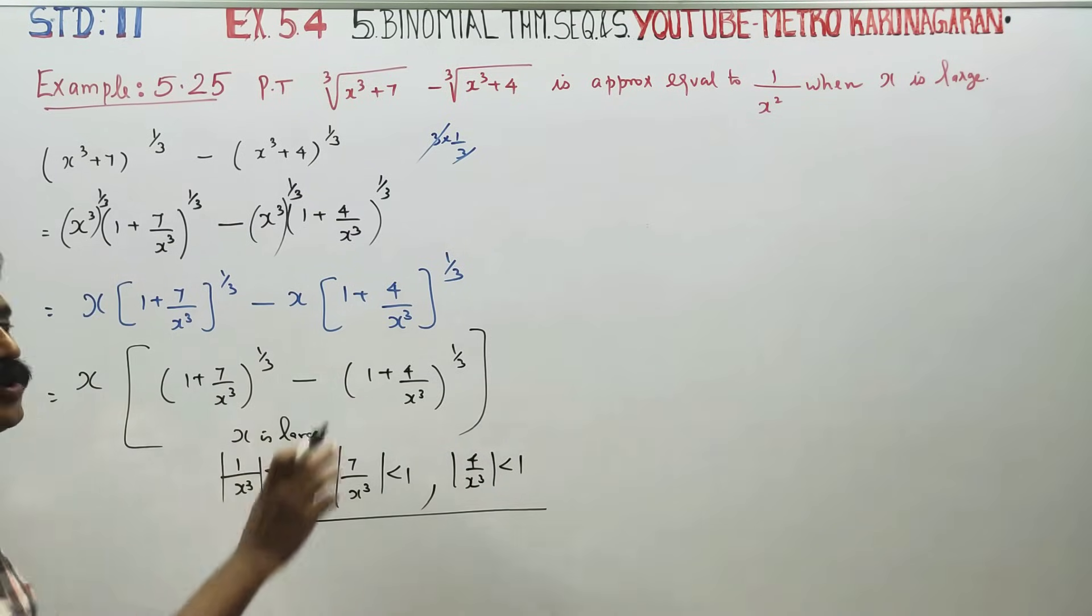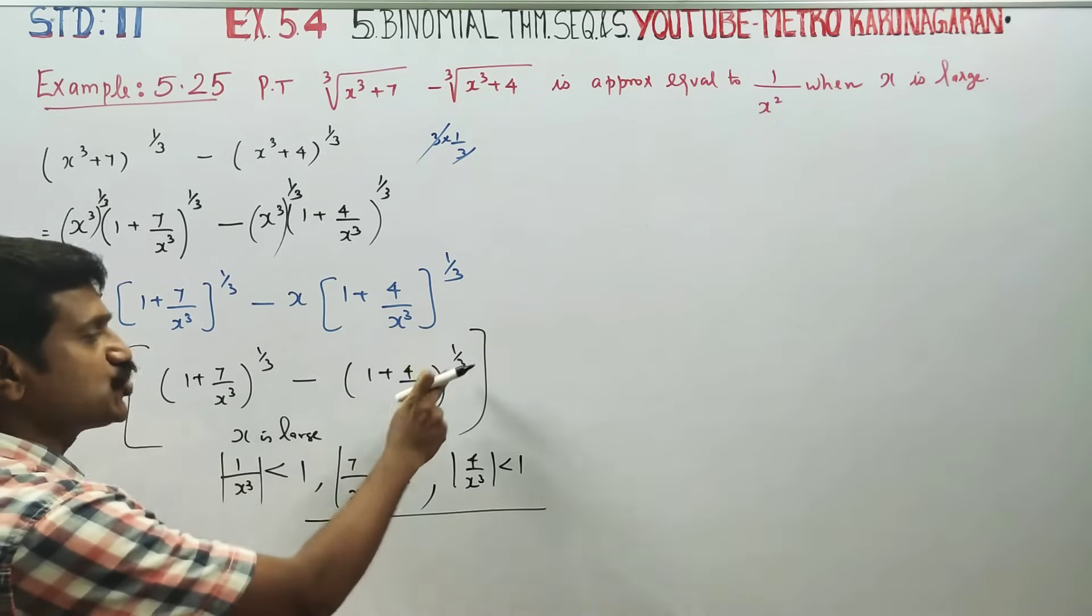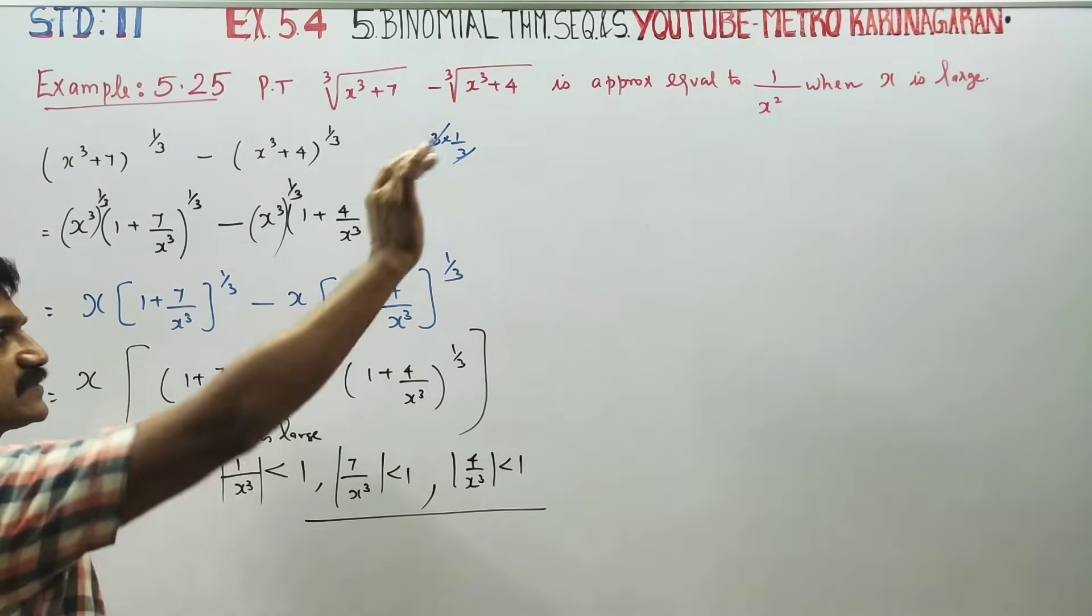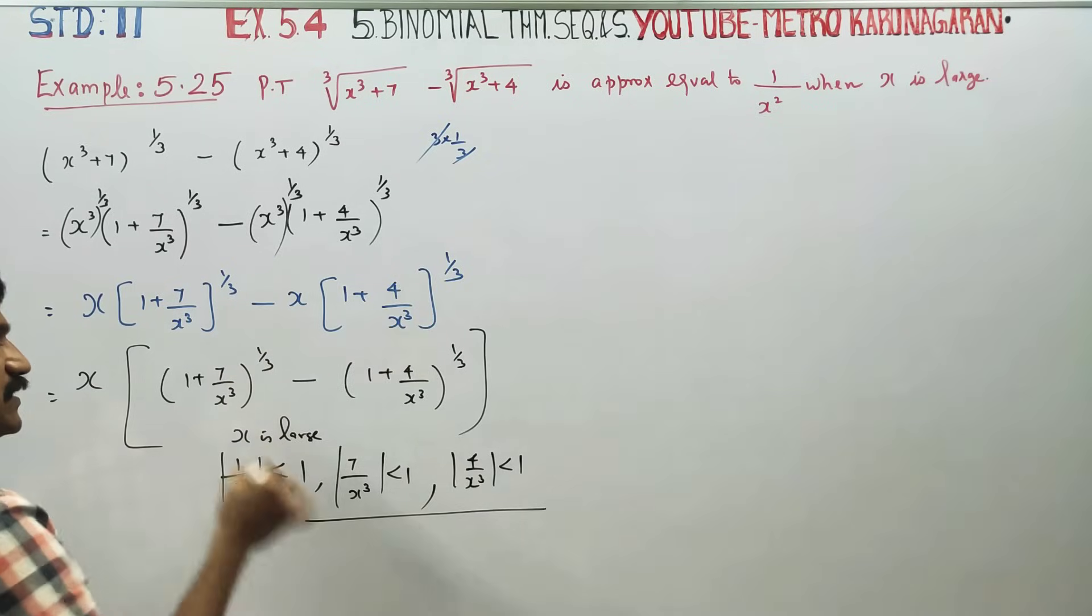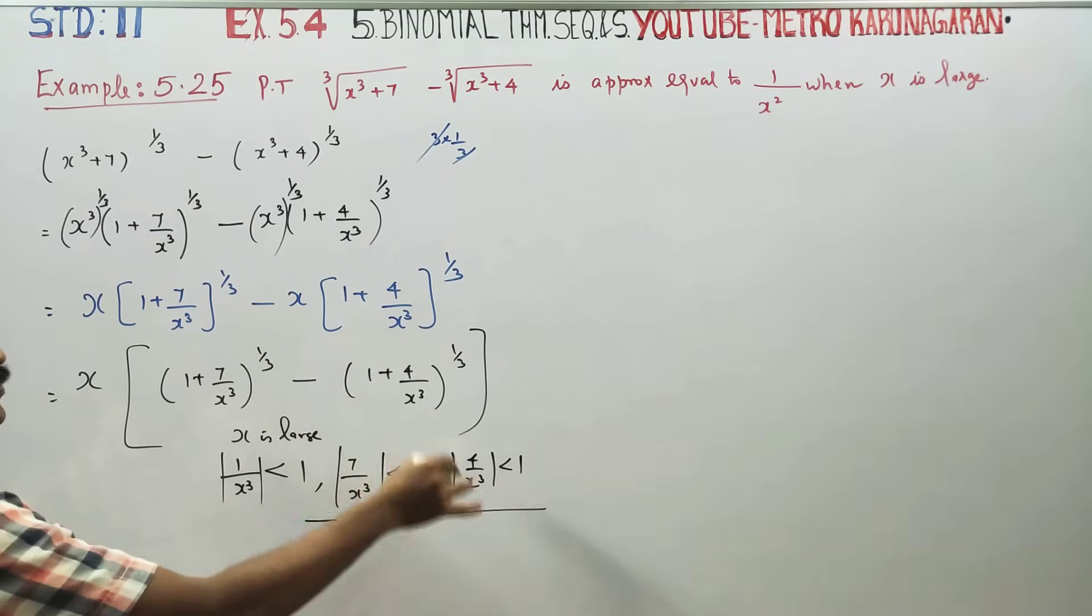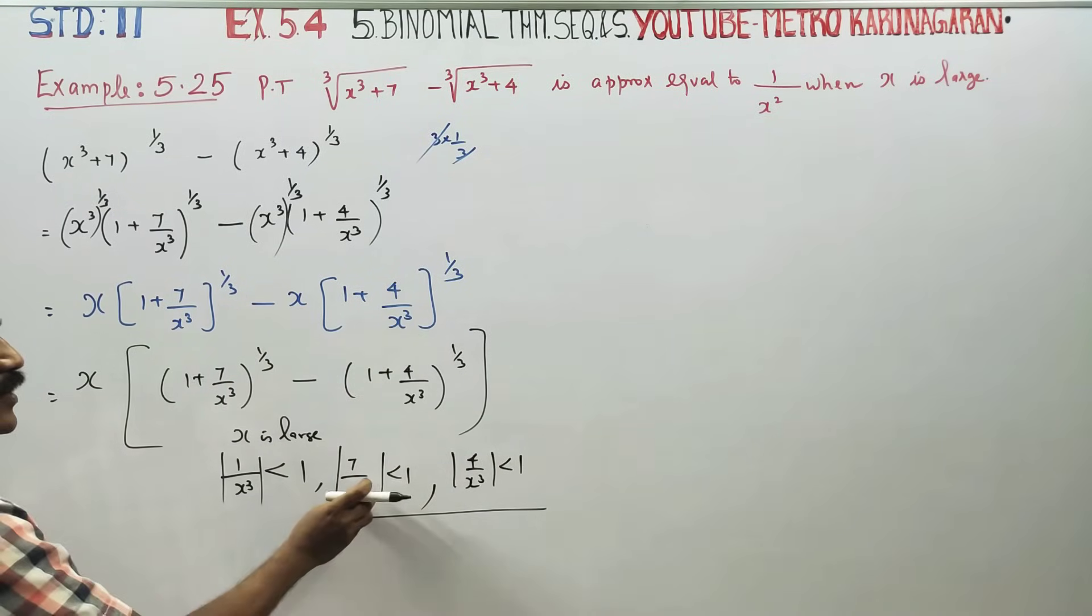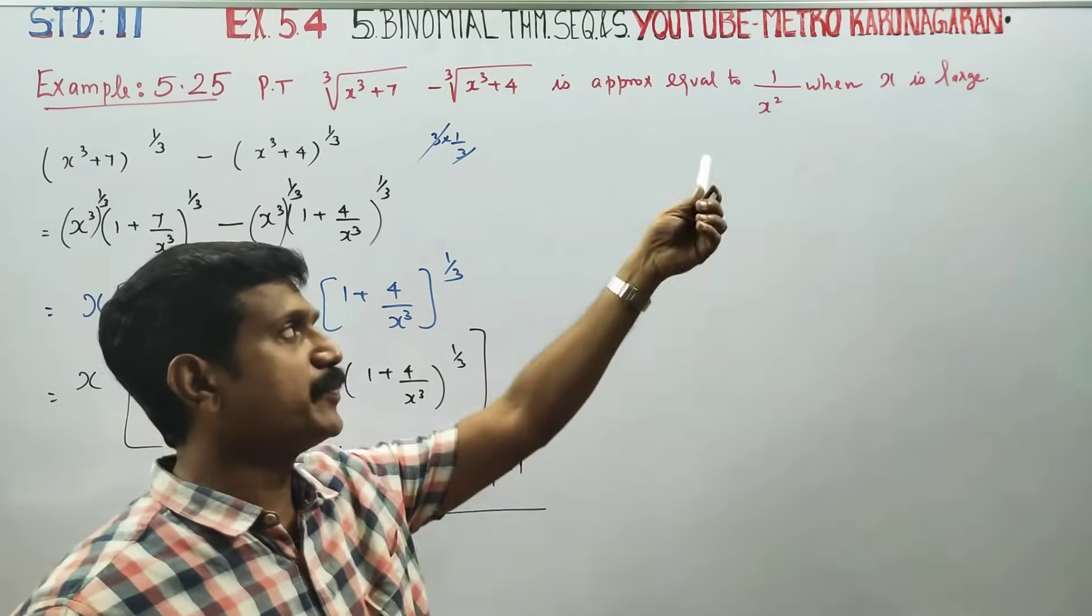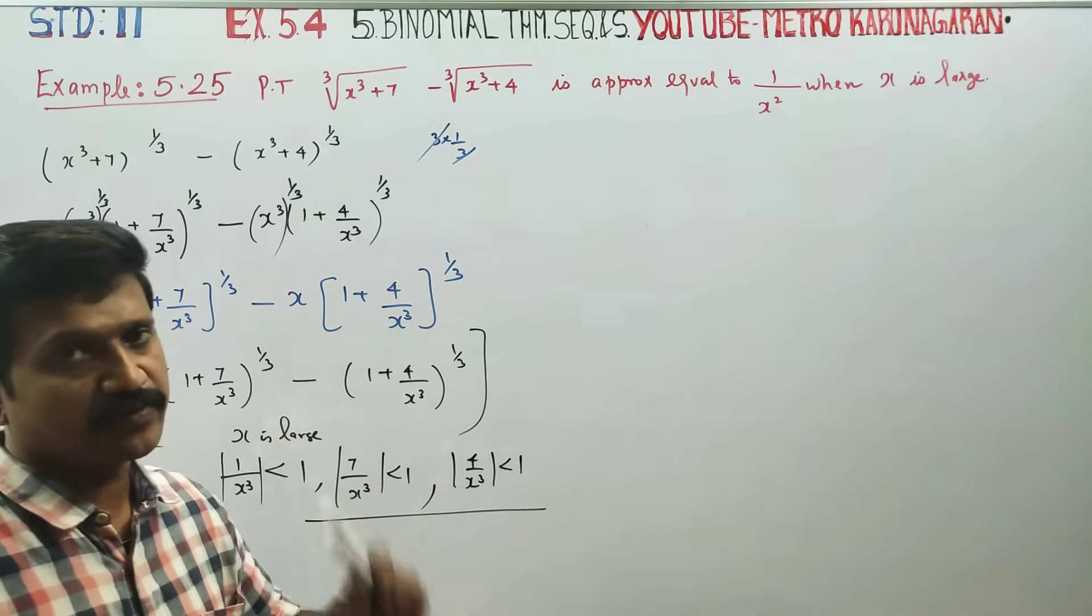This is why we use the binomial theorem for rational exponents. When x is large, 7/x³ is less than 1 and 4/x³ is less than 1. The denominator is a very small number.